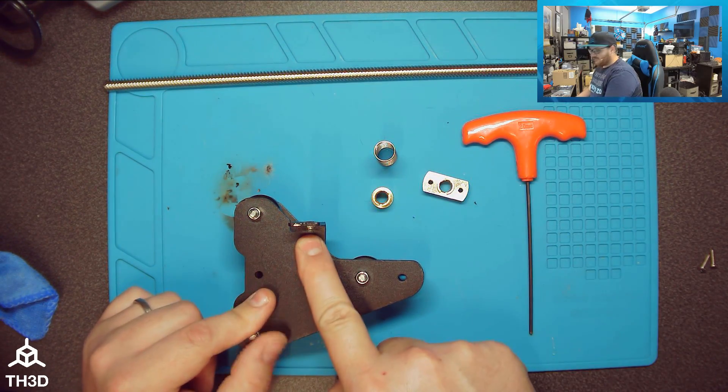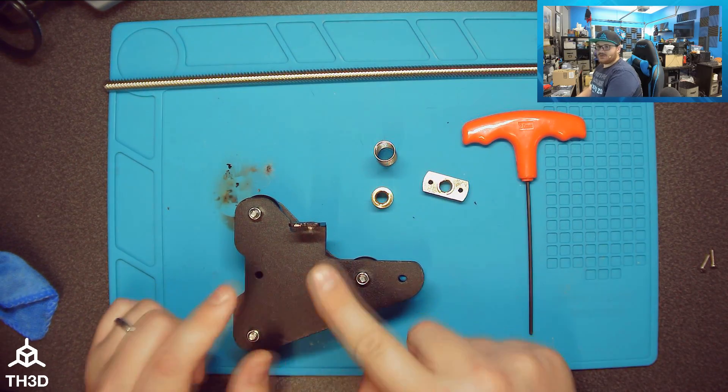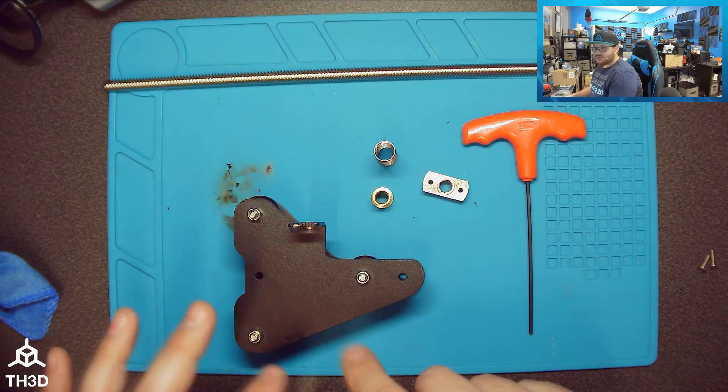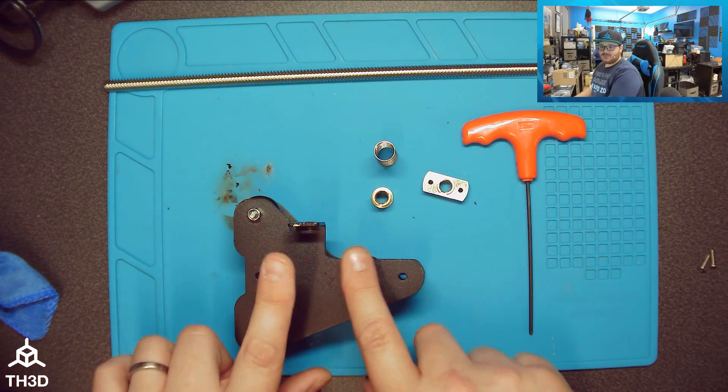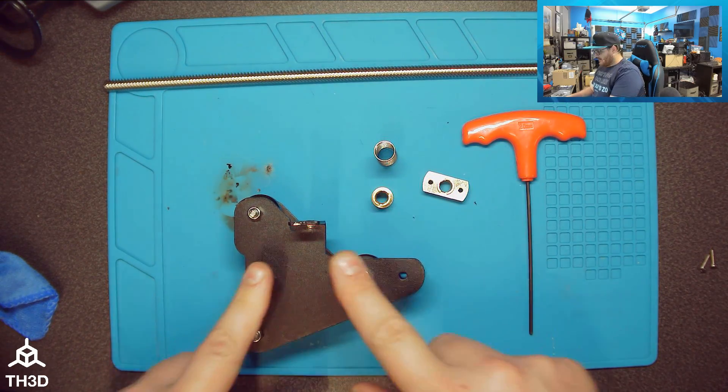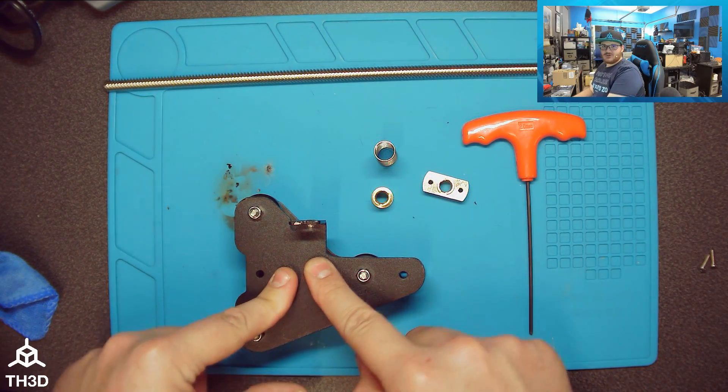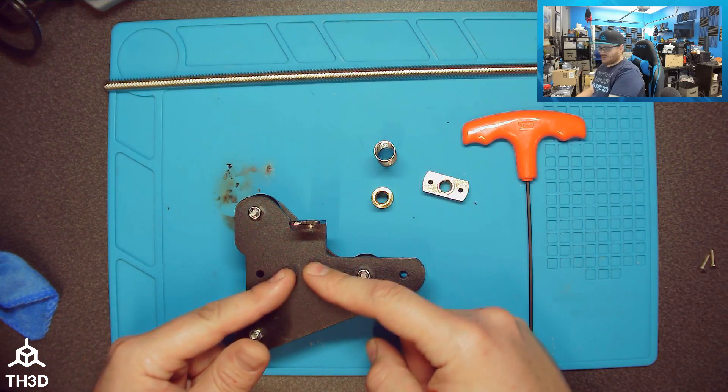This is a bracket from a Creality machine. I have it off the printer just for demonstration purposes. You do not need to remove this from your printer to install these nuts. I just have it here because it's easier to show you with it removed than to be doing it on a printer.